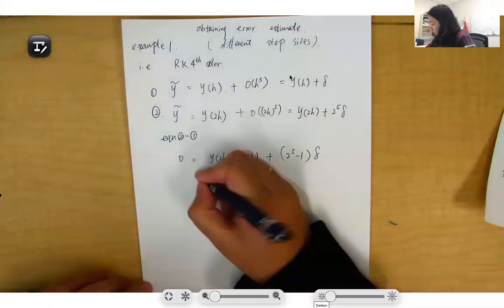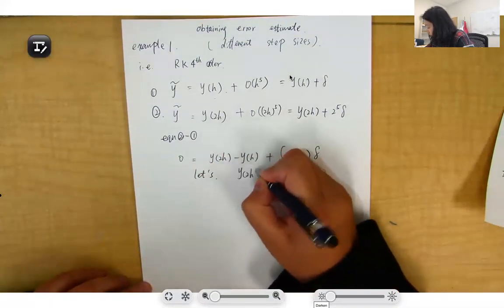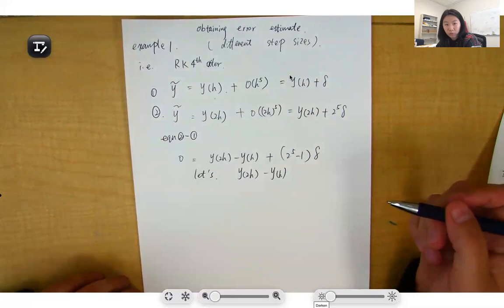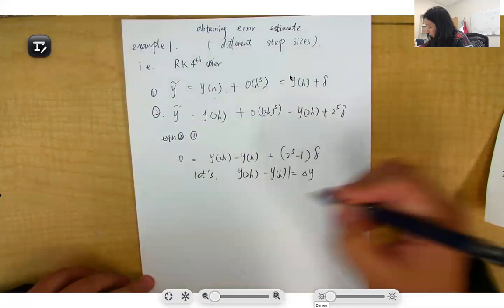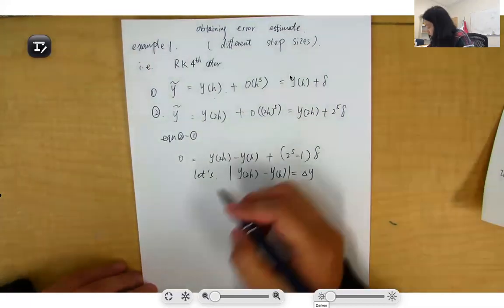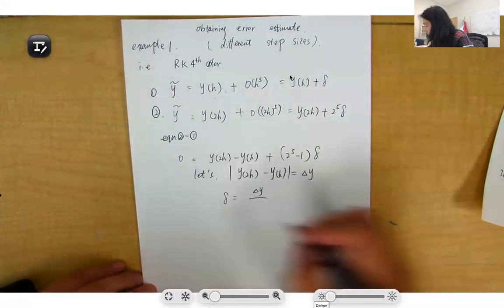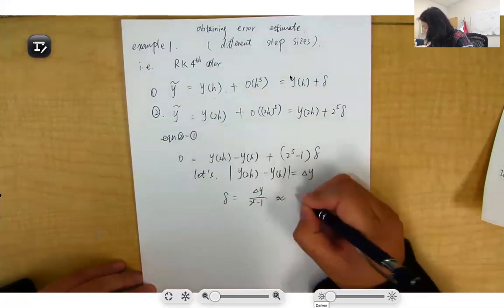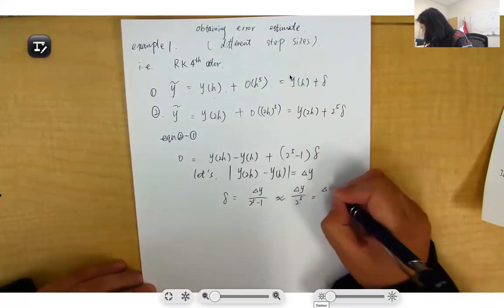Let's rename y_2h - y_h, which is basically the difference of the estimate values using Runge-Kutta with different step sizes, as Δy. Taking the absolute value, σ equals Δy divided by (2^5 - 1), estimated as Δy divided by 2^5, which equals Δy/32.